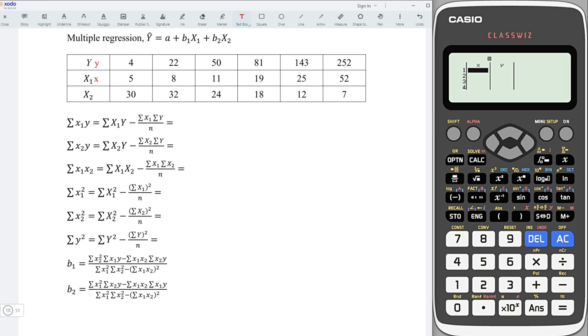Let x1 be x. Enter all the values: 5, 8, 11, 19, 25, 52. Press right and up, back to the first row of column y.